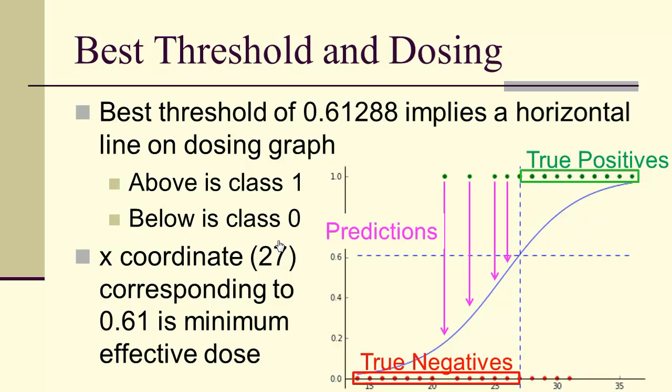The predictions, however, come from the curve. So we have these negatives, or we have these positives, that are predicted negative, because their prediction coordinates are actually below that horizontal line.